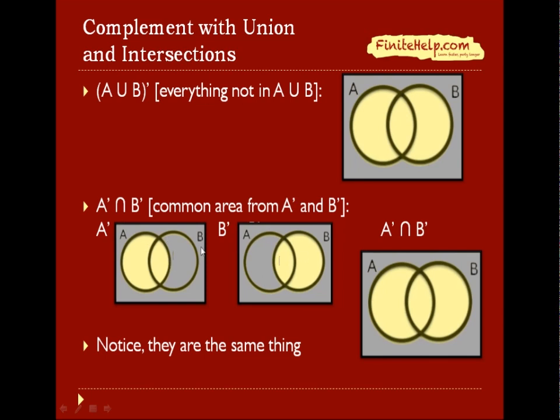And as you can see, this outside shaded area is what's common between the two. So A prime intersect B prime would be only the shaded area outside of A and B. And notice an interesting thing that these two, A union B prime and A prime intersect B prime, they're actually the same thing.